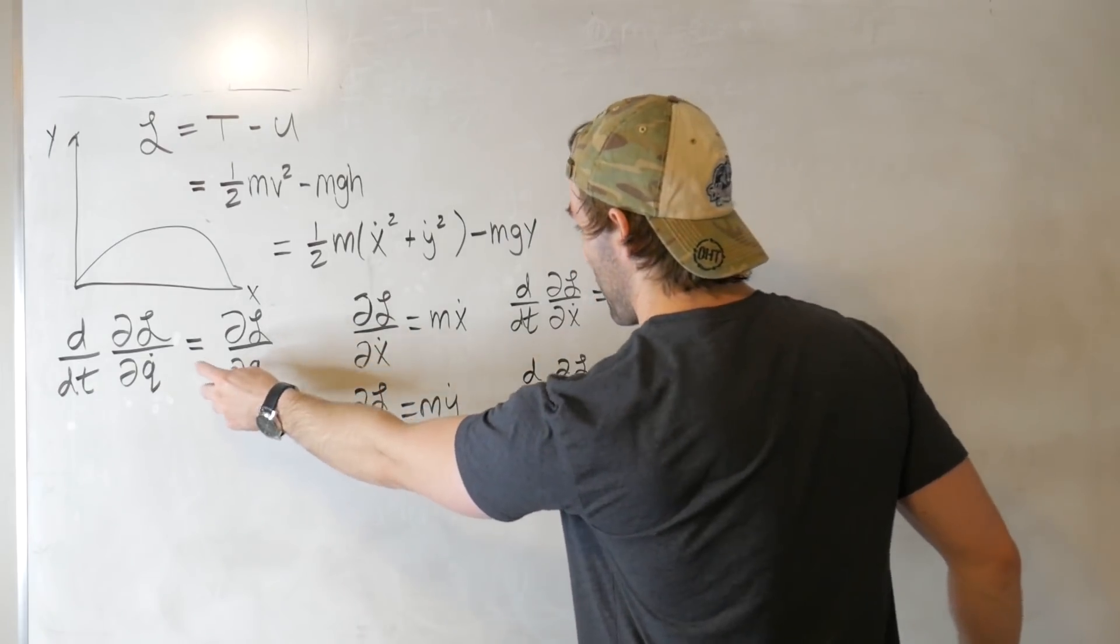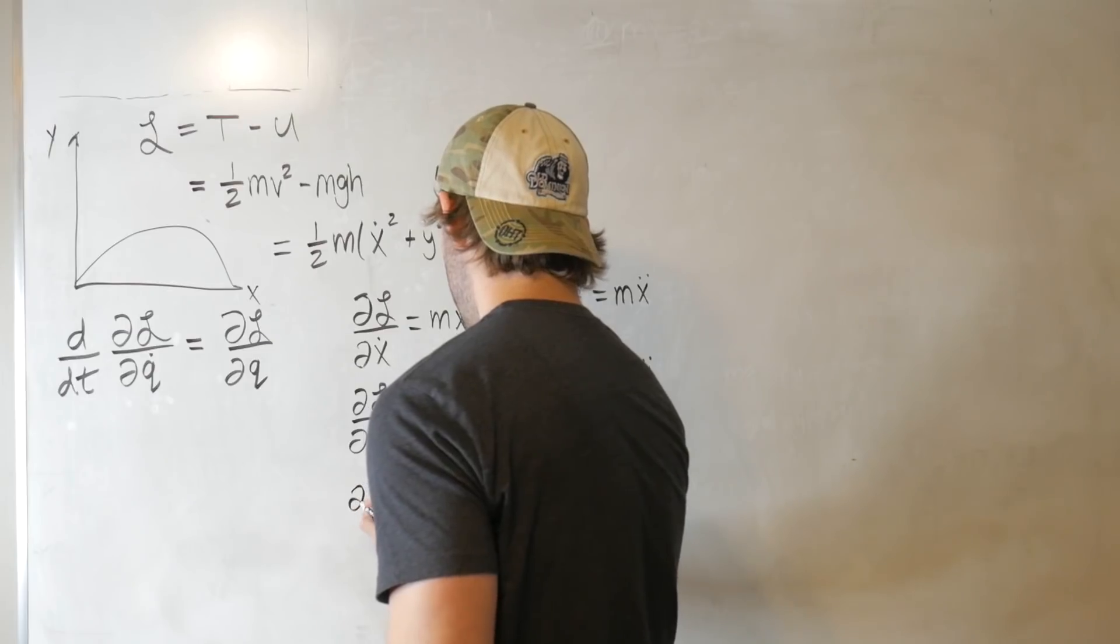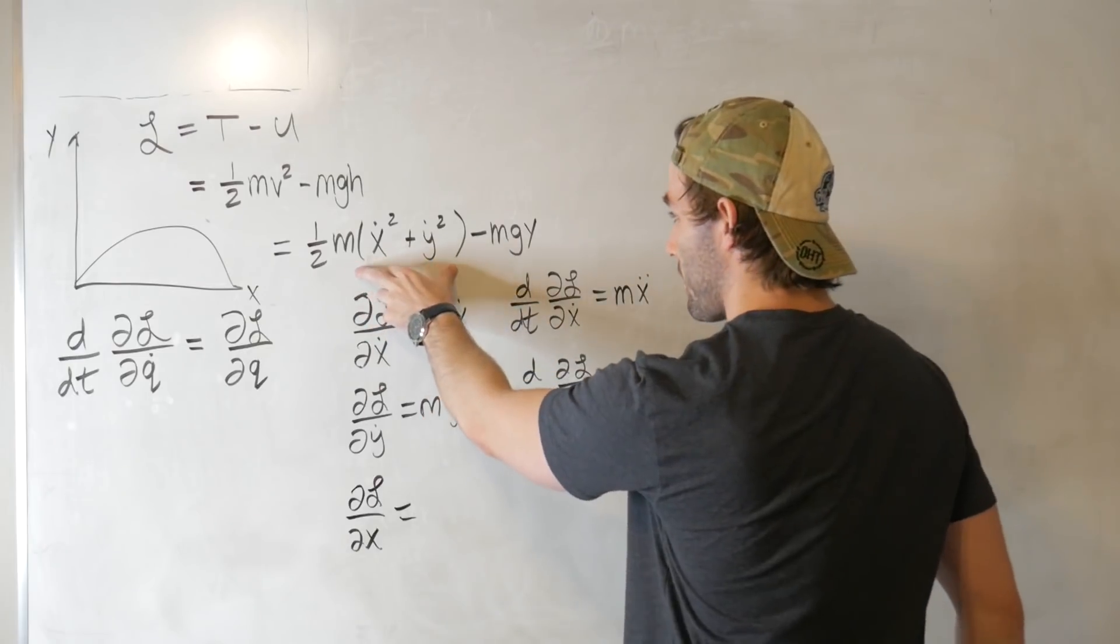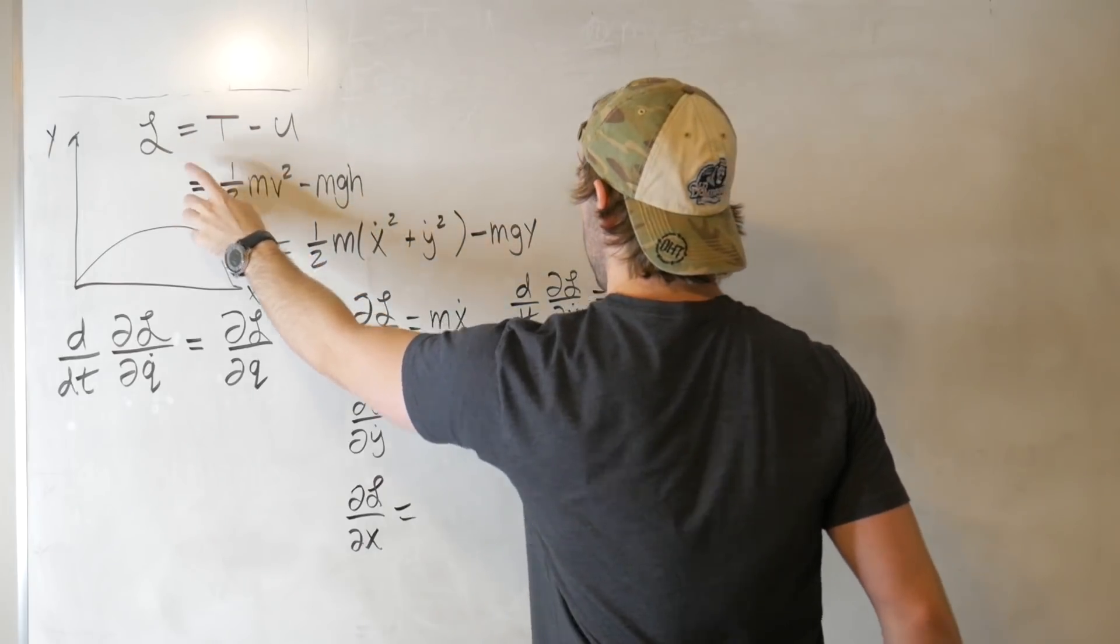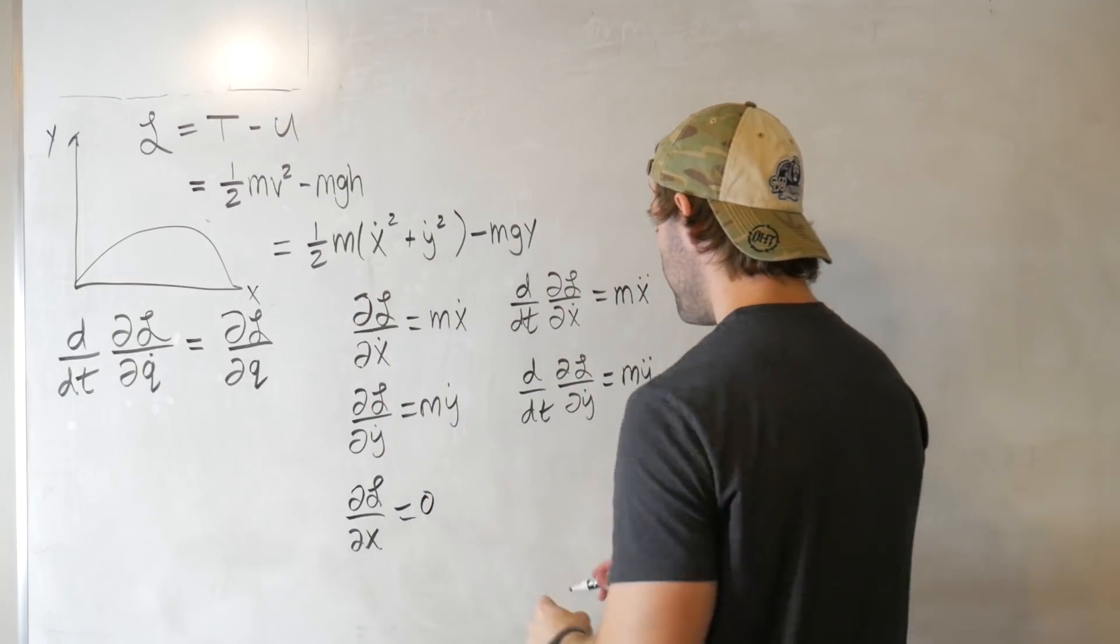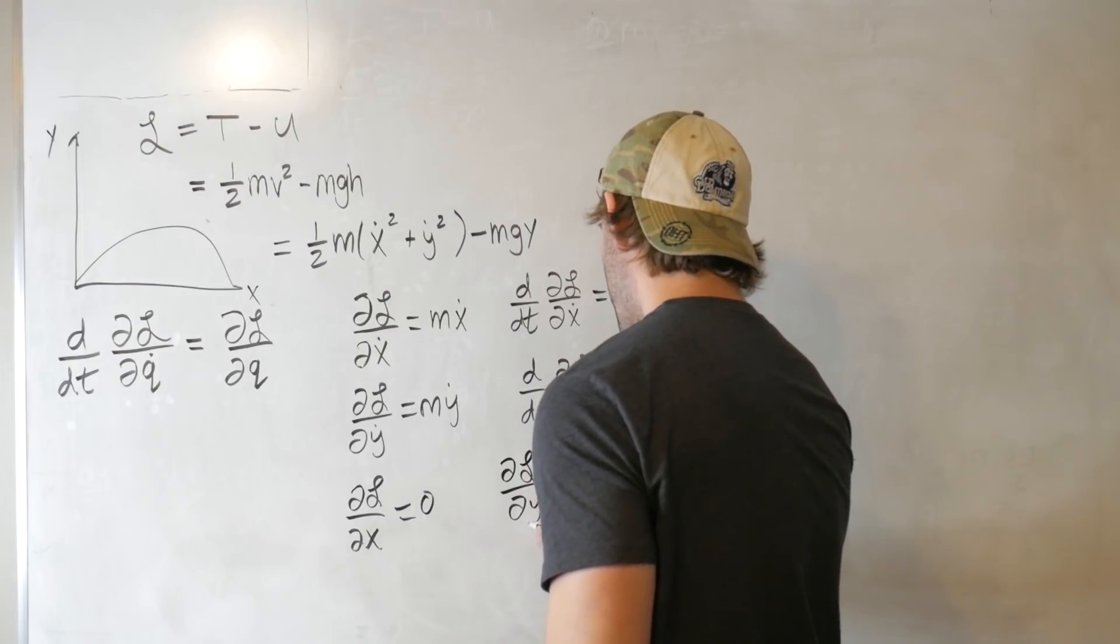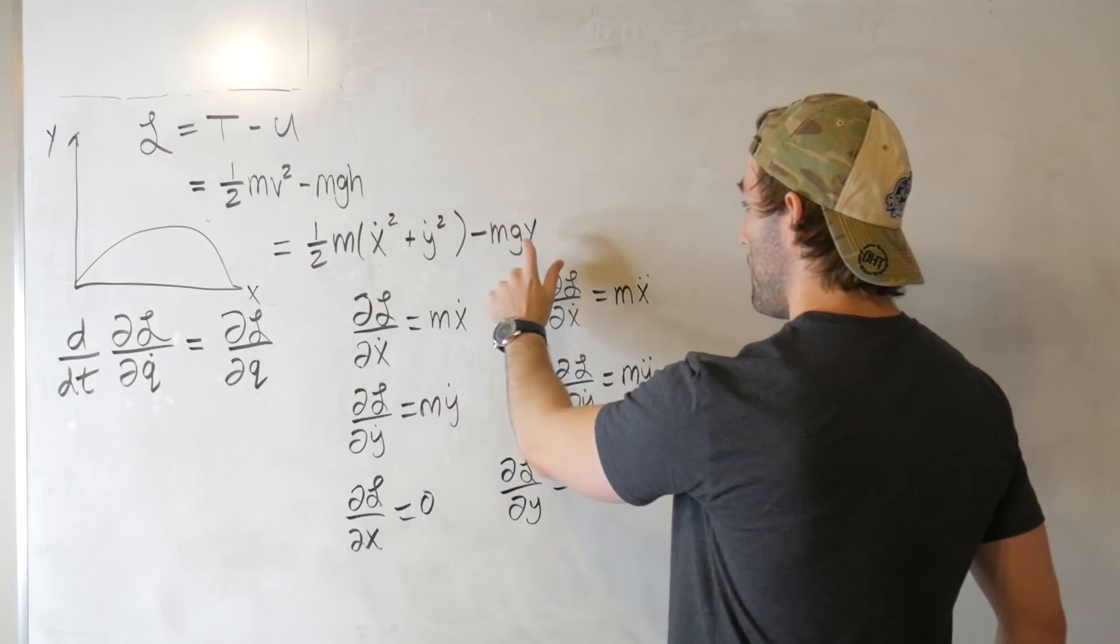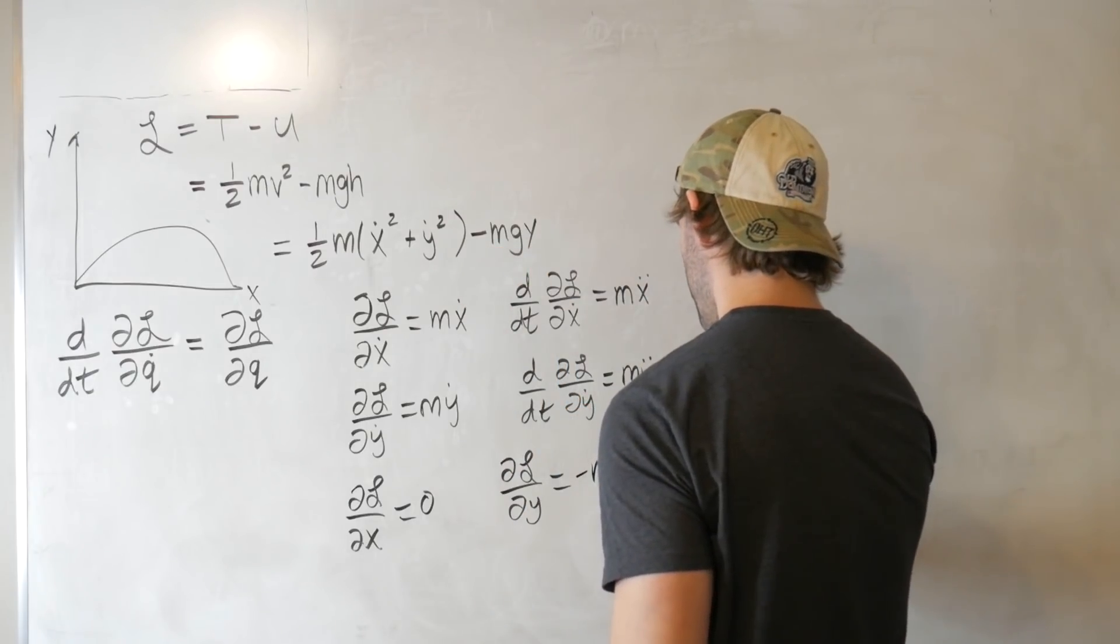And now we just need to tackle this term. This is just in terms of the generalized coordinate, not the generalized speed. So we got dL/dx. X itself doesn't show up anywhere in this Lagrangian, so the derivative with respect to x of this is just going to be 0. We have an x dot, but that's not what we're taking the derivative with respect to. And we also have dL/dy. This term goes to 0. Again, there's no explicit y dependence here. This term does, so the derivative of this with respect to y is minus mg.